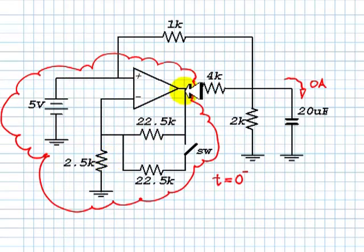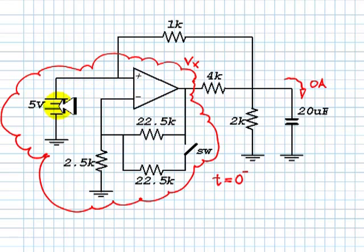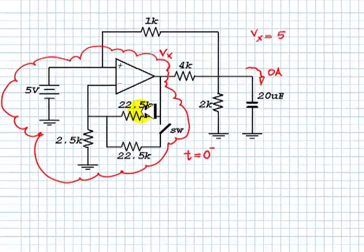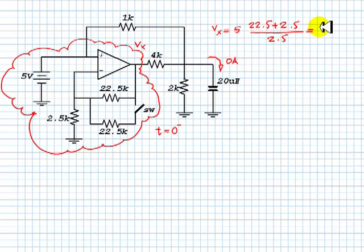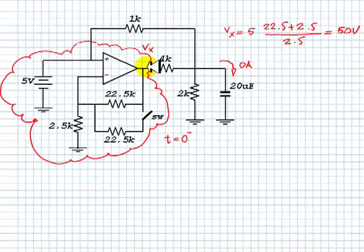So the voltage at the output of the amplifier — let me call this Vx — is going to be the input voltage to the non-inverting amplifier, 5 volts, multiplied by the gain: R1 plus R2 over R1, which is 22.5 plus 2.5 divided by 2.5. That voltage is 50 volts, and we are thankful the exercise says ignore saturation. So we are going to assume the voltage at Vx is actually 50 volts.